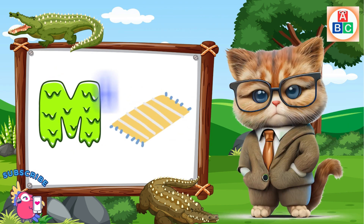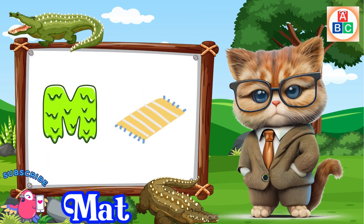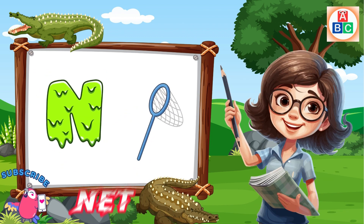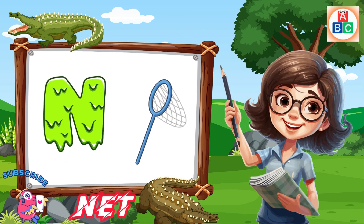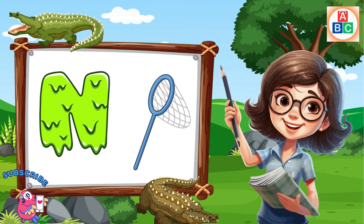M is for mat, m-m-mat. N is for net, n-n-net.